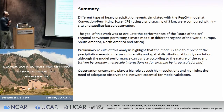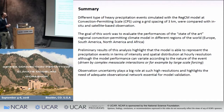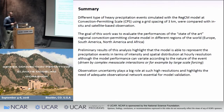In summary, different types of heavy precipitation events simulated with RegCM at convection permitting were compared with in-situ and satellite-based observations. The goal of this work was to evaluate the performance of the state-of-the-art RegCM in different regions of the world. Preliminary results show that the model is able to represent the precipitation events in terms of intensity and spatial distribution, although model performance can vary according to the nature of the events. Another important finding, as seen in the Africa case, is that observational uncertainty plays a really big role at this resolution, and it is really important to work with the observational network in order to have good model validation.